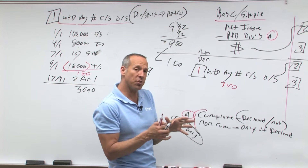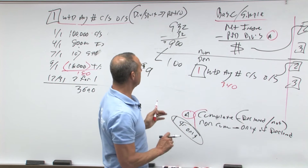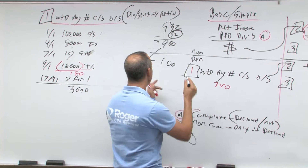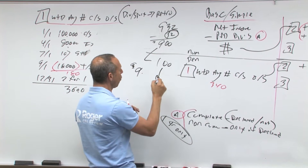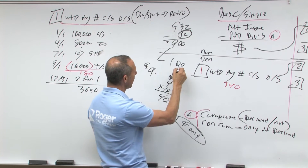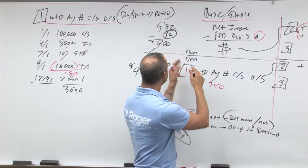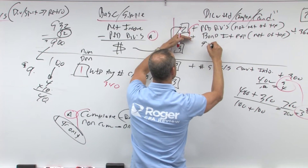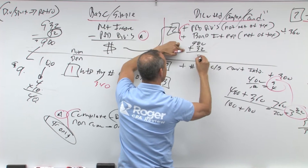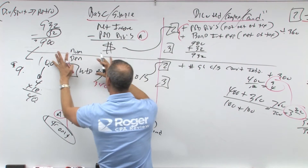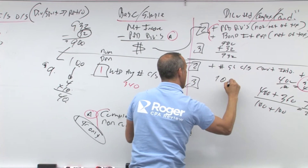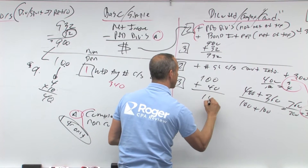Now, if they convert, what happens? If they convert, then I don't have to pay the $32, so we'll add it back. But these preferred shares are going to convert into what? There are four shares, each one gets 10, that's 40, so we're going to add 40 shares to the denominator. So we take the $900, add back the preferred dividends not net of tax, that brings us back to $932. We bring the 100 shares over and add the 40 shares, that's 140.